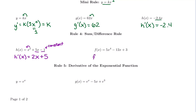Let's combine all our rules so far. F prime of x: bring down the power — I have a constant multiple, so I keep it. 5 times 4 is 20, and x to the 4 minus 1 is x cubed, giving 20x cubed. Then the mini rule: derivative of negative 12x is negative 12. And the constant at the end: derivative of positive 3 is 0.